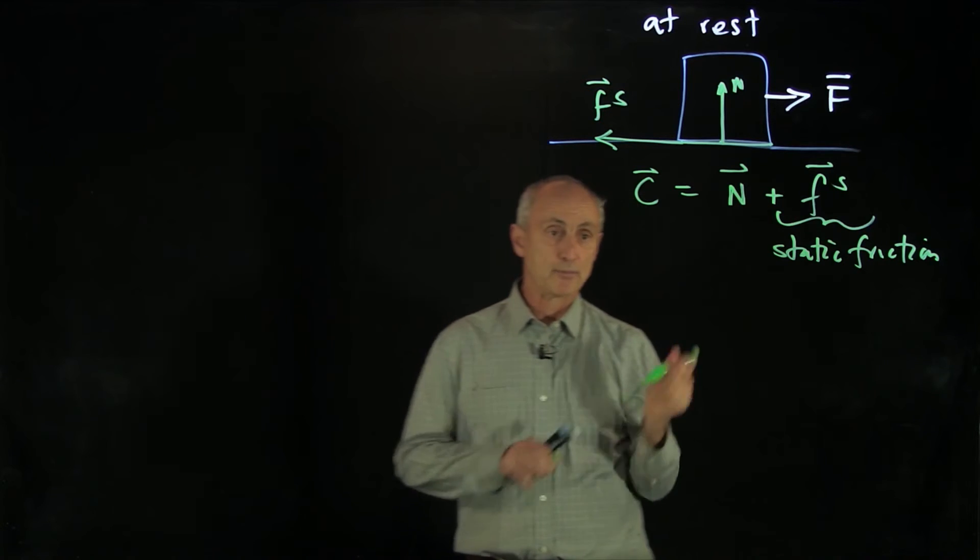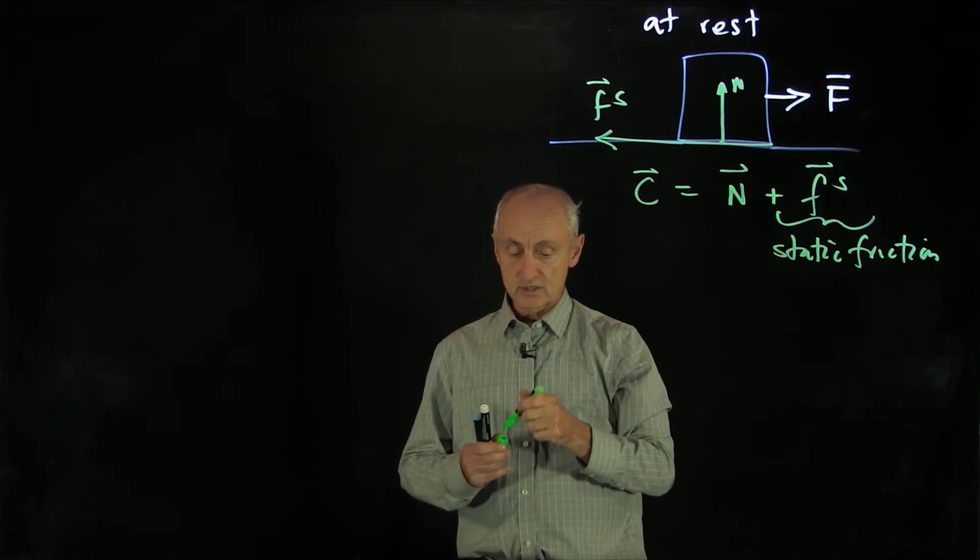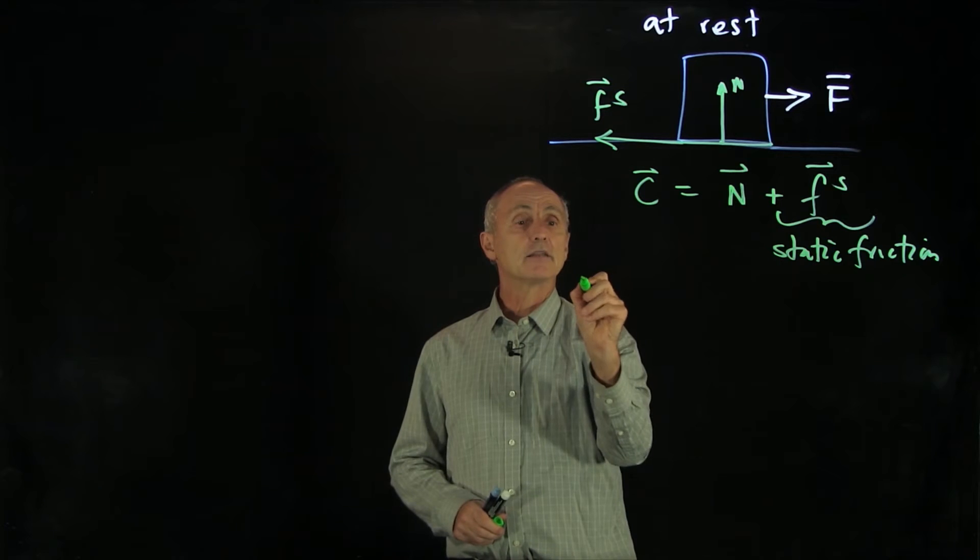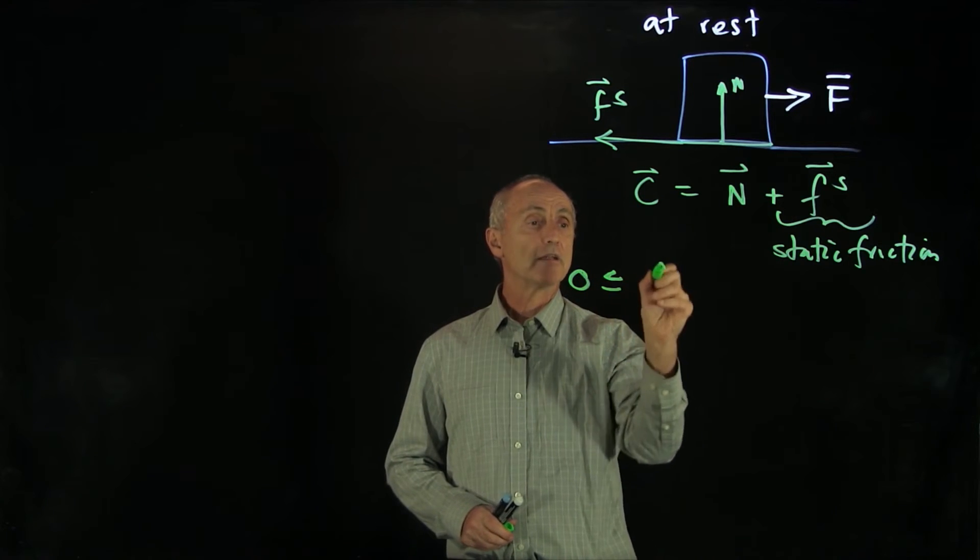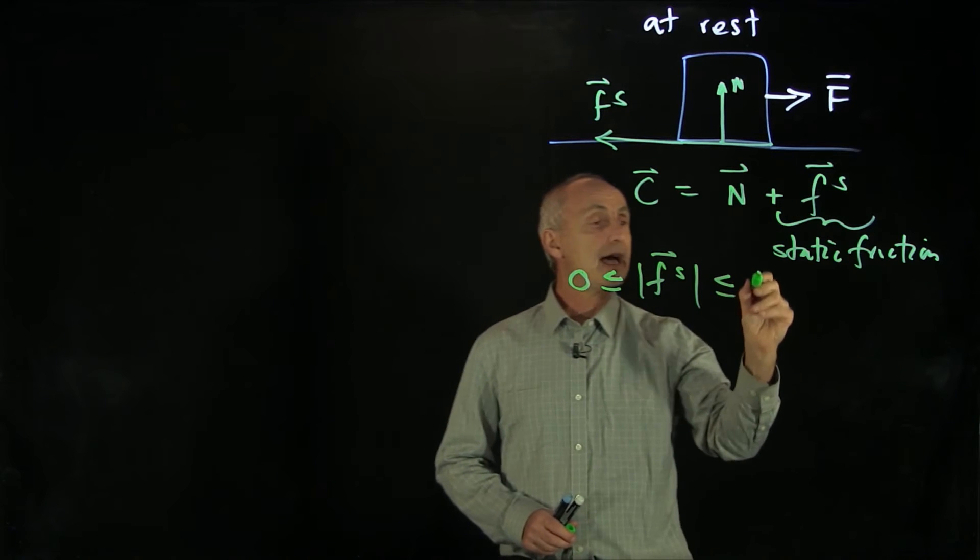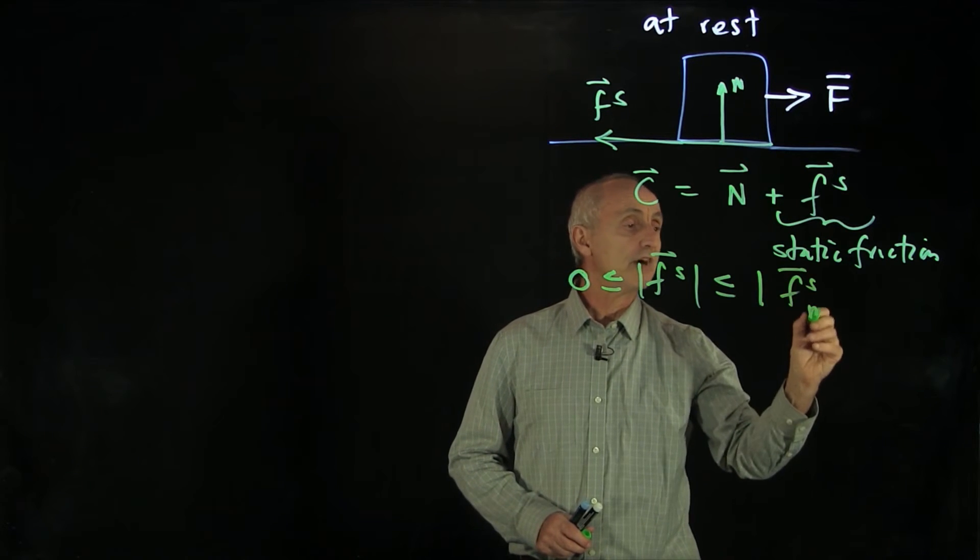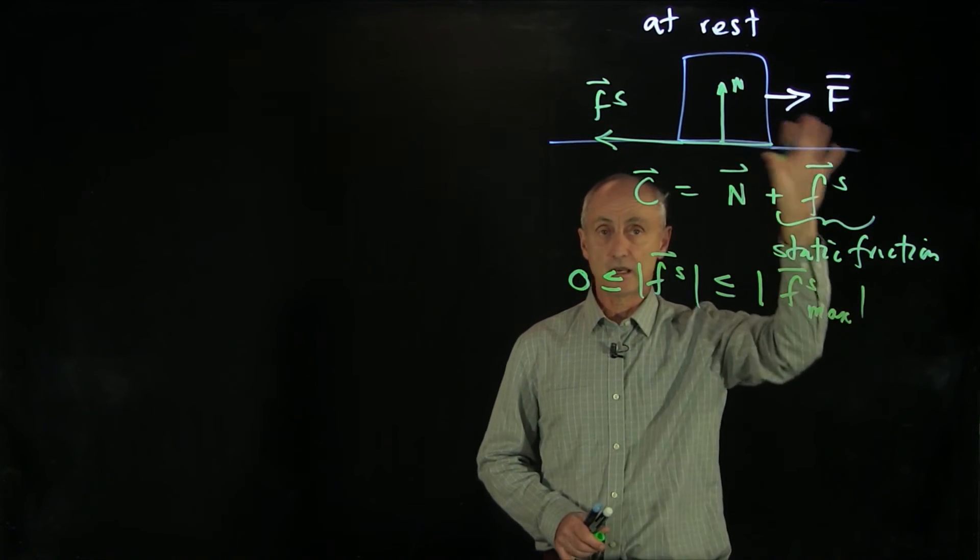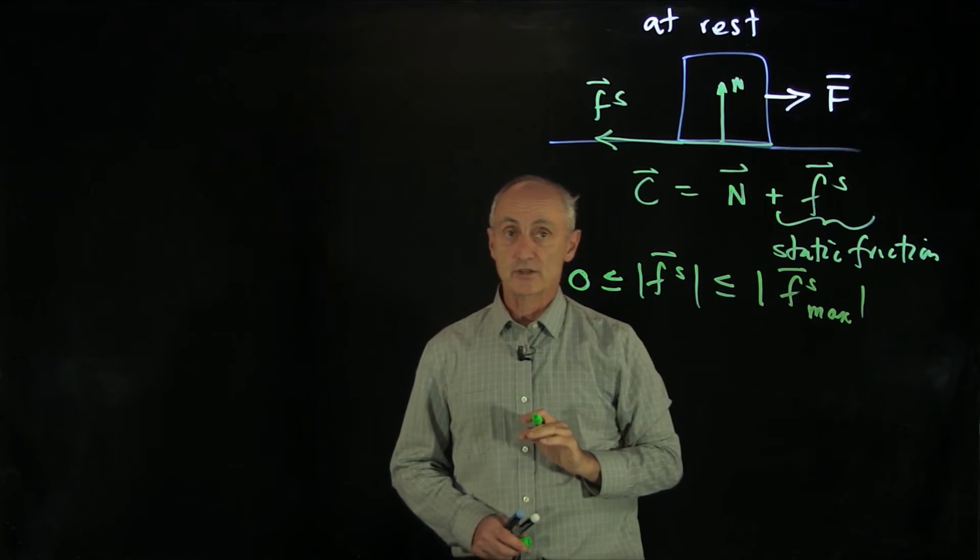How do we express those properties? Well, what we have is the idea that the static friction can vary in magnitude between 0 and some type of maximum value depending on the other constraints on the system.